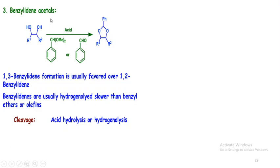The protection of a diol by using the formation of a benzylidene acetal can be done when a 1,2-diol or 1,3-diol is reacted with benzaldehyde or benzyl acetone in acidic medium to form the benzylidene acetal. The 1,3-benzylidene formation is usually favored over the 1,2-benzylidene. Benzylidenes are usually hydrogenolyzed slower than benzyl ether or olefin, therefore they can be cleaved by acid hydrolysis or hydrogenolysis.